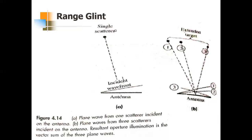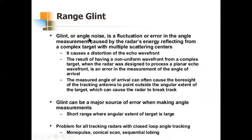The ultimate result of all this is an error in the measurement of the angle of arrival. Glint, or angle noise, is the fluctuation of error in angle measurement caused by the radar's energy reflecting from a complex target with multiple scattering centers. It distorts the echo wave front, producing a non-uniform wave front from a complex target, whereas radars are designed to handle a planar echo wave front. The measured angle of arrival can sometimes cause the tracking antenna to be pointed outside the angular extent of the target, causing a break in track.